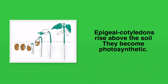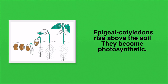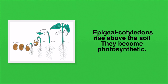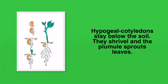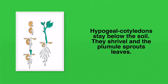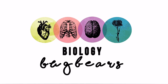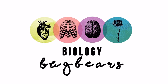There are two modes of germination. The first is epigeal germination, where the cotyledons rise above the soil and become photosynthetic — they can actually undergo photosynthesis. The second mode is hypogeal germination, where the cotyledons stay below the ground, they shrivel, and it is the plumule that sprouts the first leaves. That covers seeds and germination for the Irish Leaving Cert.